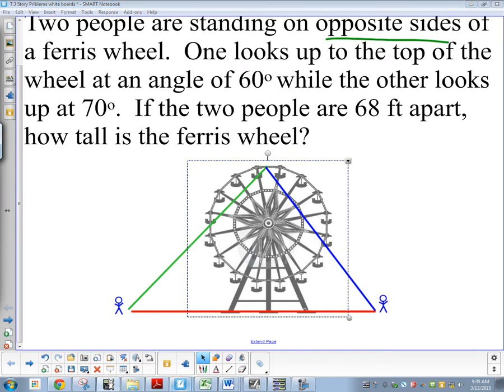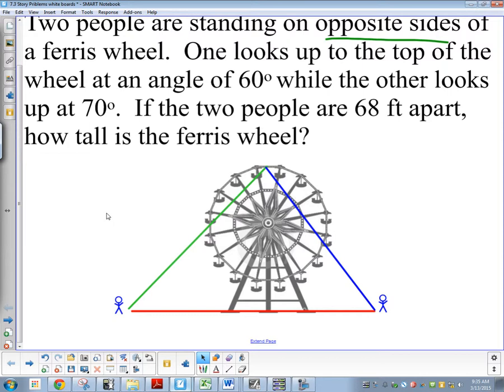Once we've done that, let's start labeling stuff. It says one looks to the top of the wheel at an angle of 60 degrees. So, which angle looks 60 and 70? Which one looks smaller? The one on the left or the right? The left. I would say that looks more like a 60 degree angle. It doesn't matter which one you do where. I'm just doing it. 60 and 70. I've got this. They're looking up at that angle. That's how I know it's the bottom ones. And then the other thing it tells you is they're 68 feet apart. So, what's 68 feet? The red line is 68 feet, the bottom.